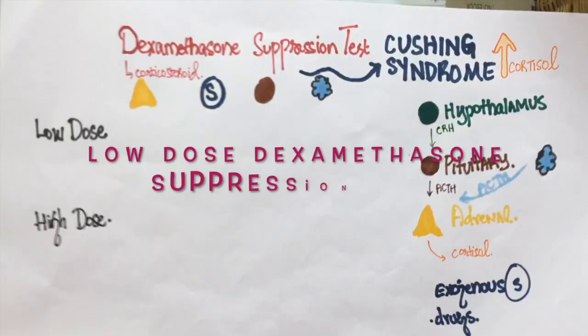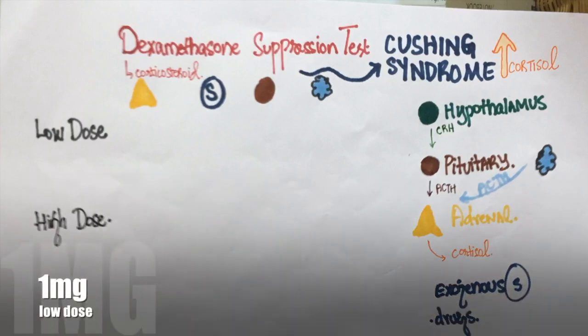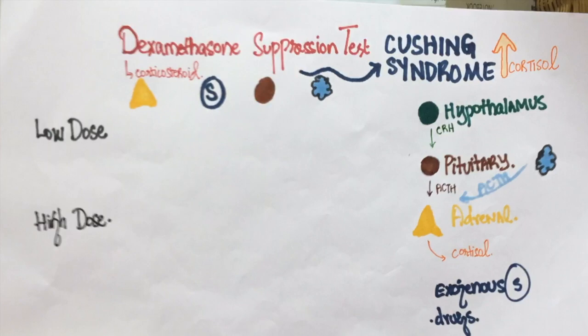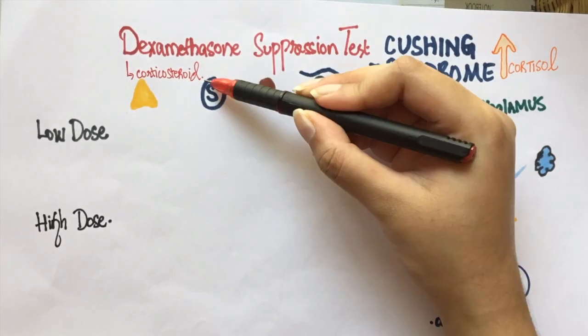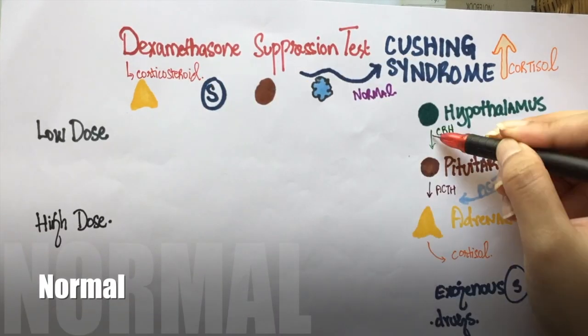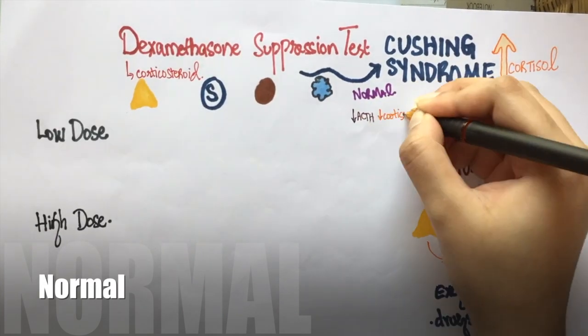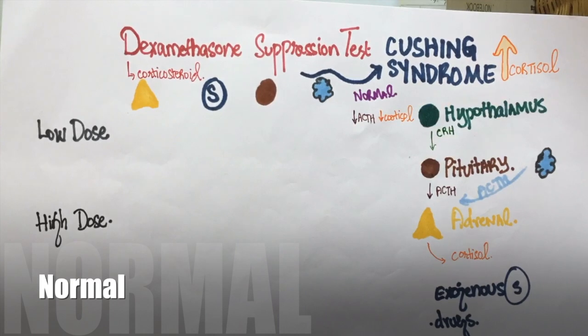Let's first understand the low-dose dexamethasone suppression test. The patient is given 1 mg of dexamethasone at night. The next morning, the cortisol levels are checked. Dexamethasone is a corticosteroid, so it will inhibit ACTH and CRH by negative feedback. Since there is less stimulation coming from above, the adrenals will secrete less cortisol. Ultimately, when cortisol levels are checked in the morning, they will be reduced.